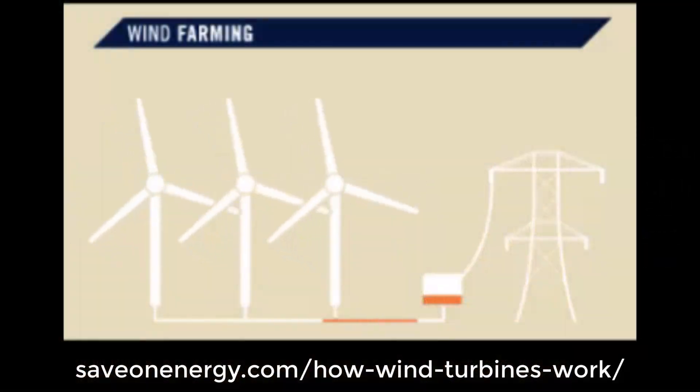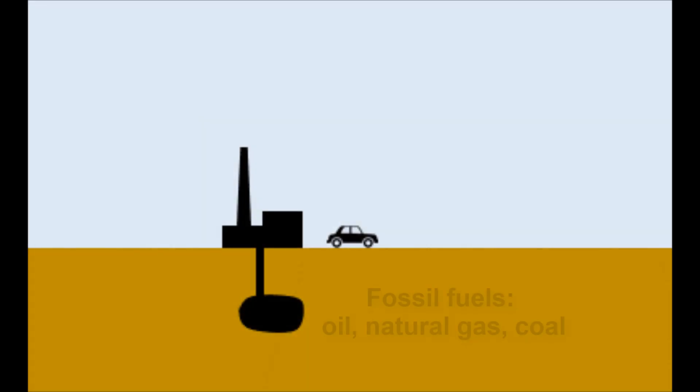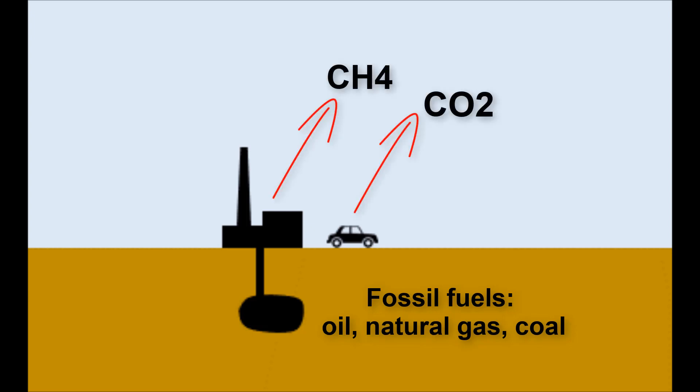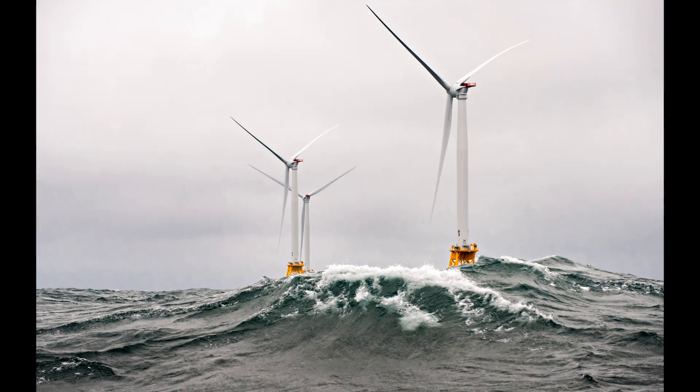Now we use wind turbines to make electricity from the wind. This is a great way to make electricity because it doesn't involve burning oil, natural gas, or coal. Using those fuels, which we call fossil fuels, releases gases into the air that are heating up our planet, but wind turbines don't pollute in that way.